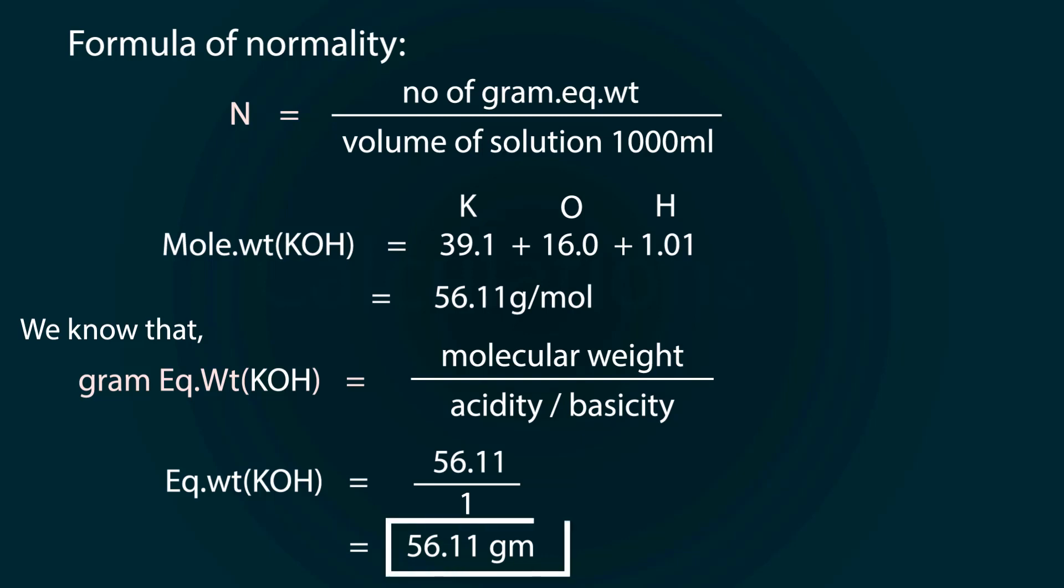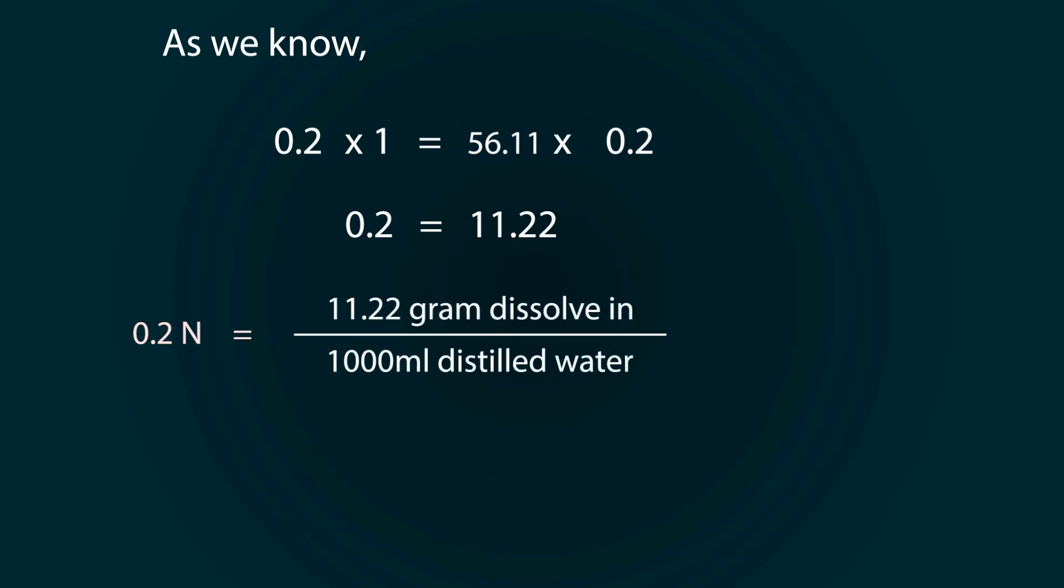So, gram equivalent weight is 56.11 grams. We know that we required 56.11 grams for 1 normal. But we have to find out 0.2 normal. So, multiply 0.2 on both sides. For 0.2 normal solution, we have to add 11.2 grams of potassium hydroxide.